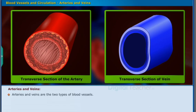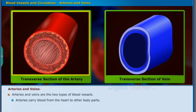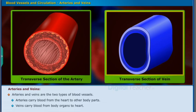Arteries and veins are the two types of blood vessels. Arteries carry blood from the heart to other body parts. Veins carry blood from body organs to heart.